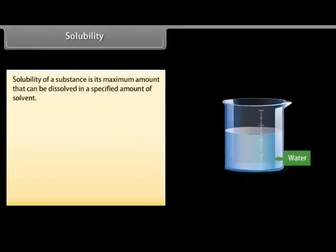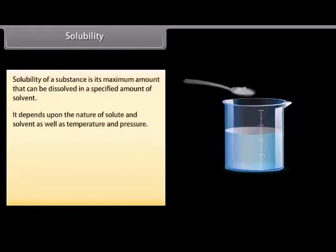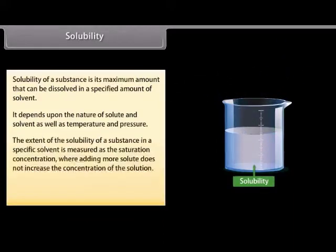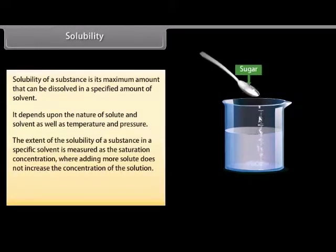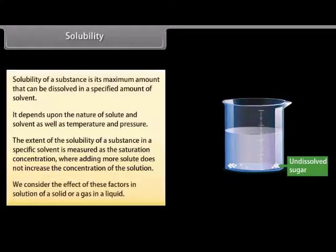Solubility of a substance is its maximum amount that can be dissolved in a specific amount of solvent. It depends upon the nature of solute and solvent as well as temperature and pressure. The extent of solubility is measured as the saturation concentration, where adding more solute does not increase the concentration of the solution. We consider the effect of these factors in solutions of a solid or a gas in a liquid.